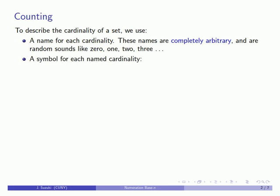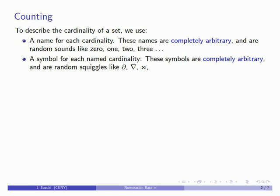The other thing we need is a symbol for each named cardinality, and again, these symbols are completely arbitrary, and they're random squiggles like this one, this one, this one.